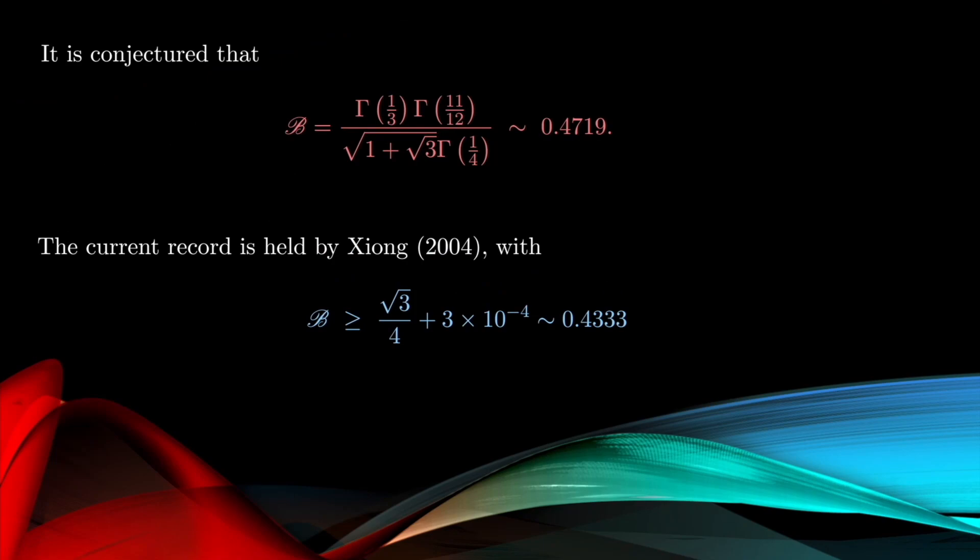So it's in fact conjectured that this ratio of gamma functions is the bound. We know that it's bounded above by this, but it's conjectured to always be the case. And so what remains is to get a sharper lower bound.